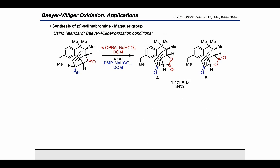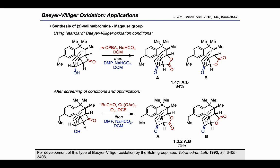Finally, I want to look at a challenging case studied by the McGauer group in a total synthesis reported in 2018. Just two steps from the end, they found that applying standard Bayer-Villiger conditions gave a mixture of products A and B in nearly equal amounts. However, they were able to circumvent the selectivity problem to a degree using conditions reported by the Bom group, which used pivaldehyde, copper acetate, and oxygen. With these conditions, they were able to favor the desired isomer B in a ratio of 3.2 to 1.